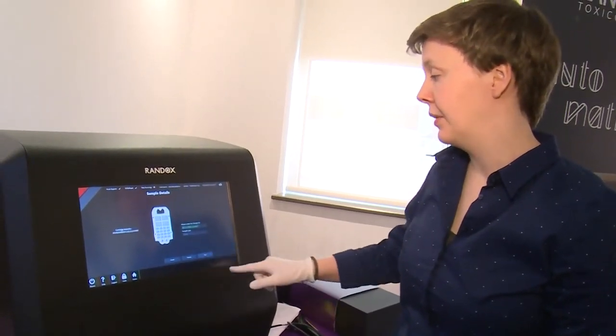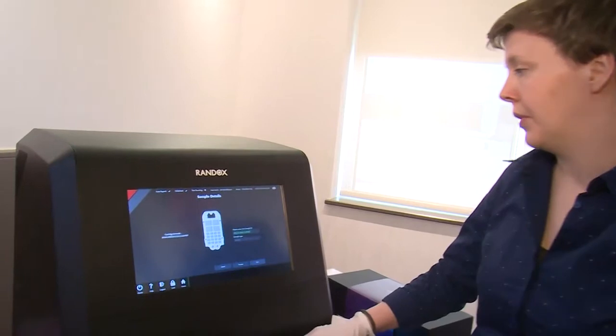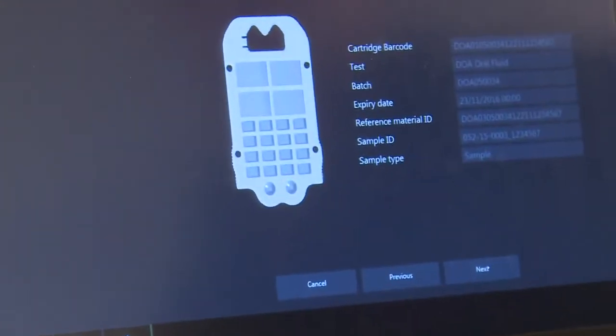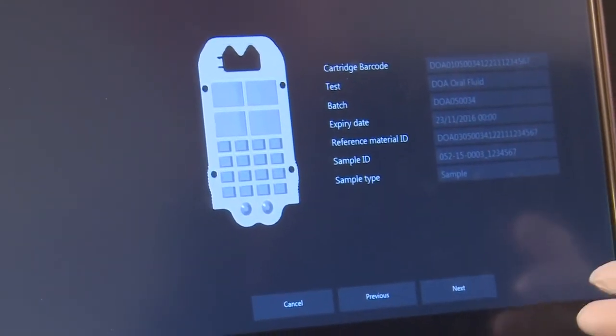You can enter a sample ID if required or continue to run the sample. Everything's there, so hit next. The summary shows what you're running, then next again.